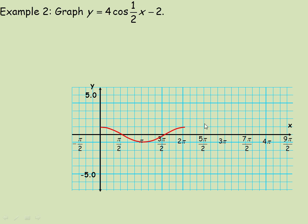On to the second example. We're asked to graph a cosine function, so I have the basic cosine graph here. If y equals cos x is not transformed, it starts at a local maximum, hits a minimum in the middle, and returns to the maximum at the end. Halfway between the beginning and the middle is where it crosses the axis, and it crosses again three-quarters of the way through.